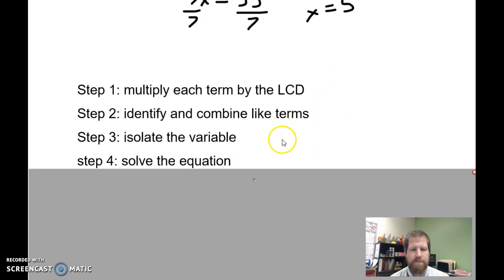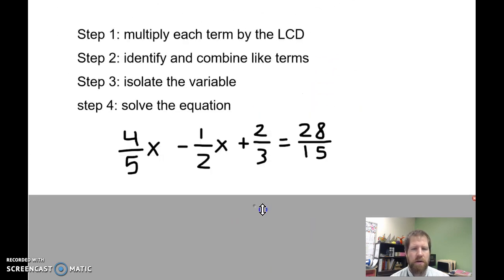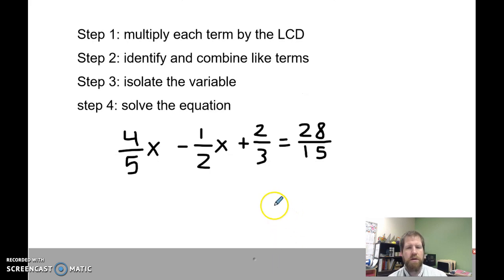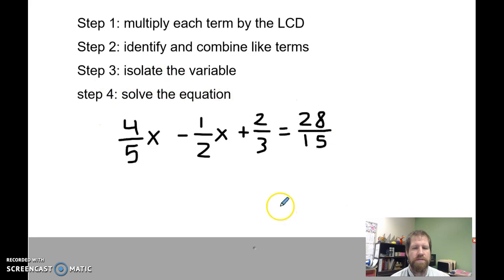If we look at our steps, our steps are not really growing. I've combined one of our steps from before. So our first step is to multiply each term by the lowest common denominator. Our second step is to identify and combine those like terms. Step 3 is to isolate the variable. And step 4 is to solve the equation.